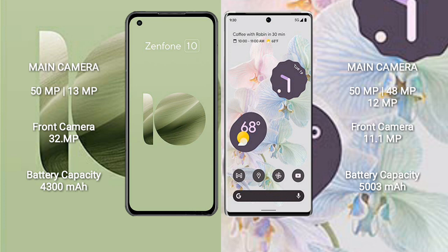Google Pixel 6 Pro has a triple rear camera setup of 50MP plus 48MP plus 12MP and an 11.1MP front camera. Asus Zenfone 10 has a 4300mAh battery with 30W fast charging support. Google Pixel 6 Pro has a 5003mAh battery with 23W fast charging support.